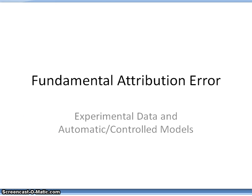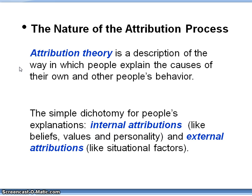Just to recap the attribution process: attribution theory is a description of the way in which people explain the causes of their own and other people's behavior. We discussed two types of attributions — we can categorize them as internal, like beliefs and values and personality, and external, situational factors. The literature sometimes uses two other words: internal attributions are called dispositional attributions, and the external attributions are called situational attributions.